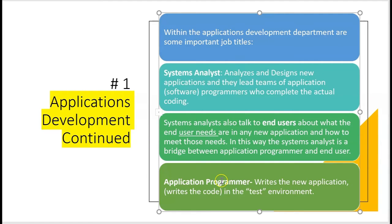The application programmers are the ones writing the new application. They're doing the coding in the test environment, coming up with the new computer system so that the company can upgrade its existing system already designed by the systems analyst. The systems analyst and application programmers are wearing yellow shirts — they know coding very well. Another term for application programmer is software engineer or computer programmer.